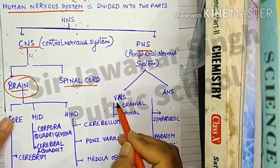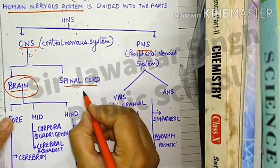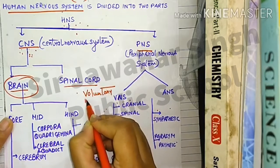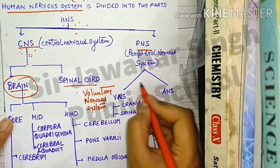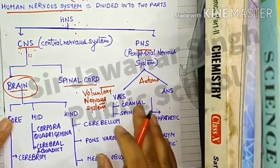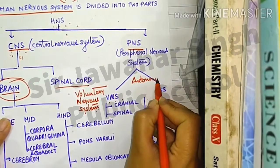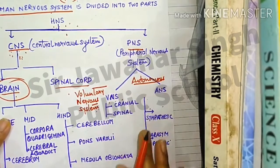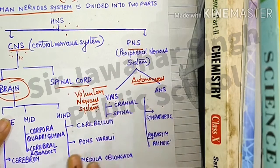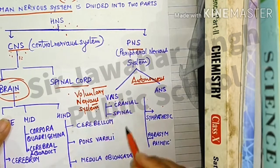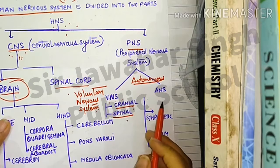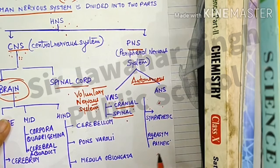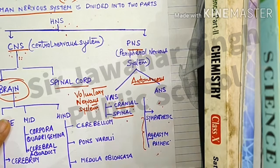VNS stands for Voluntary Nervous System, and ANS stands for Autonomous Nervous System. PNS is further divided into VNS and ANS. VNS is further divided into cranial nerves and spinal nerves. ANS is divided into two parts: sympathetic and parasympathetic, and they work antagonistically to each other.